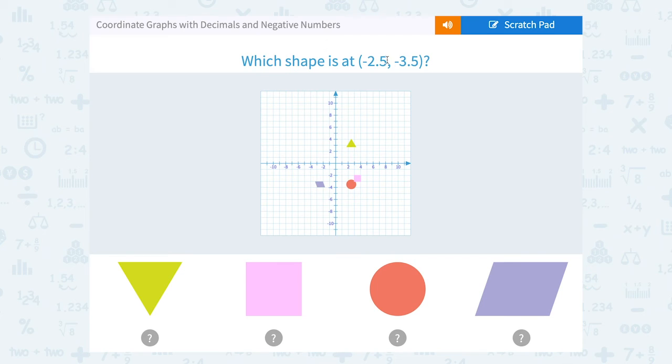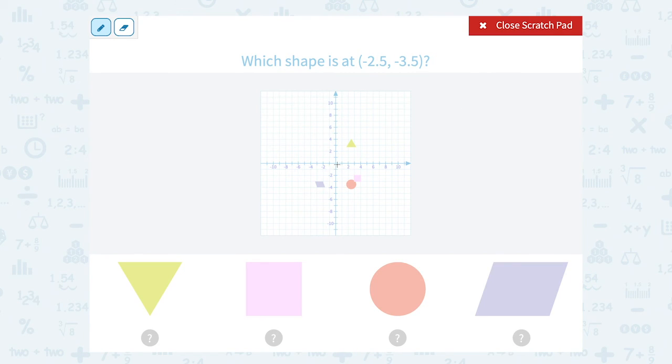Which shape is at negative 2.5, negative 3.5? Okay, well this tells us to go 2.5 to the left. So 1, 2, and then another half puts me in between, halfway between the negative 2 and the negative 3 mark.